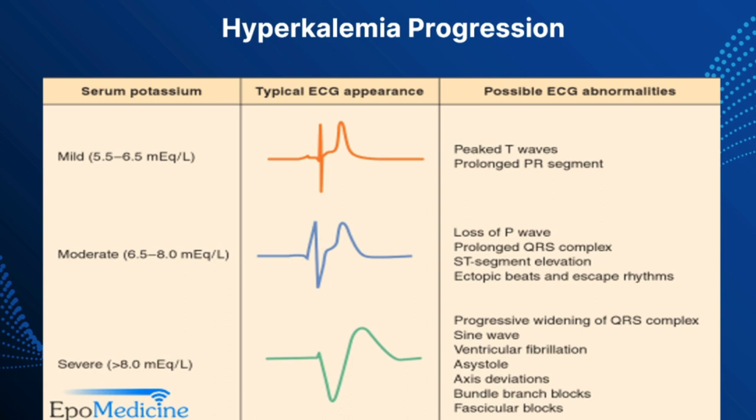First, the T-wave becomes peaked and the PR interval increases. Second, the P-wave flattens out and eventually becomes non-existent, with some QRS widening. The QRS widens and widens until you go into a sine wave, the patient goes into V-fib, and then it widens some more until you reach asystole.